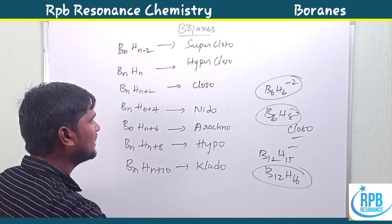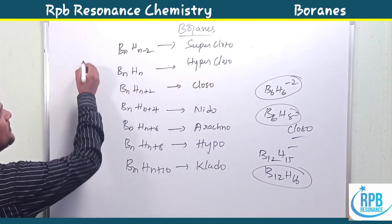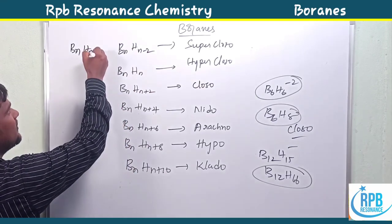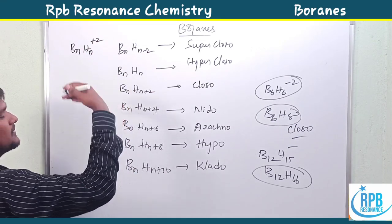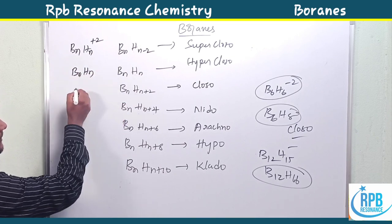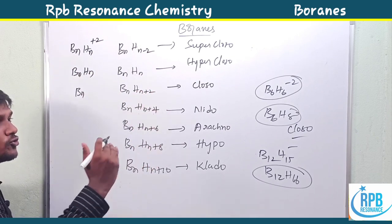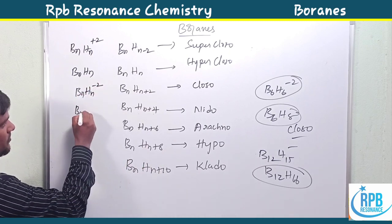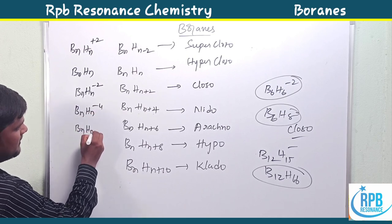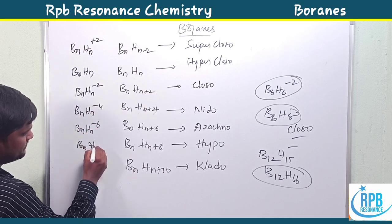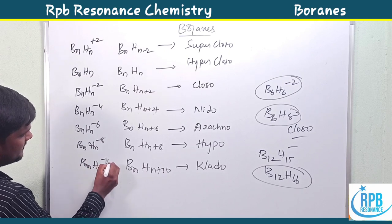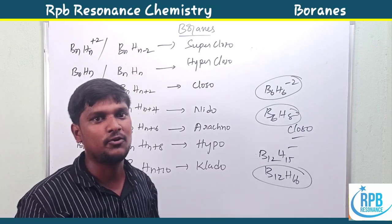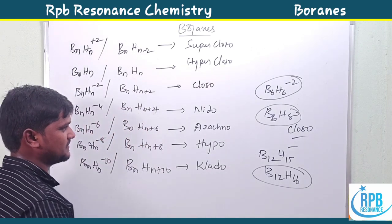We can also represent boranes using an alternative notation. BnHn corresponds to hyper-closo; BnHn-2 corresponds to closo; BnHn-4 corresponds to nido; BnHn-6 is arachno; BnHn-8 is hypo; BnHn-10 is clado. This is another equivalent representation for classifying borane compounds.